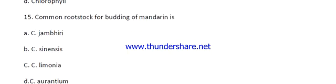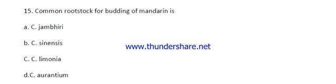Question number fifteen: What is the common rootstock for budding of mandarins? The options are: Citrus jambhiri, Citrus sinensis, Citrus limonia, or Citrus aurantium. The right answer is Citrus limonia — that is Rangpur lime. Remember, the best rootstock in South India is also Rangpur lime, with scientific name Citrus limonia.